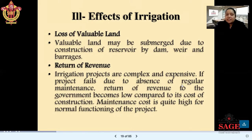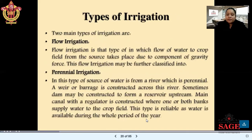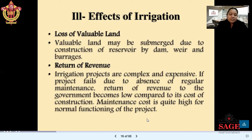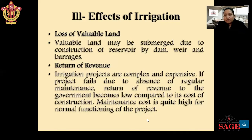Irrigation projects are complex and expensive. If a project fails due to absence of regular maintenance, the return of revenue to the government becomes low compared to the cost of construction and maintenance. This impact on revenue generation is a major disadvantage of irrigation systems.